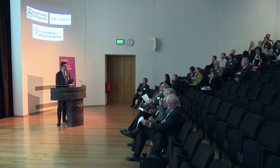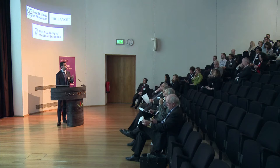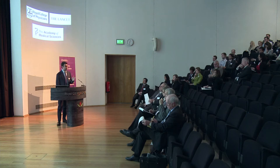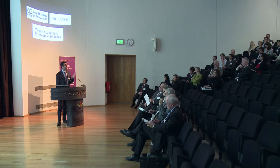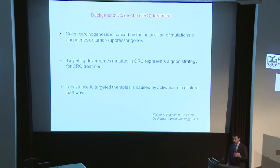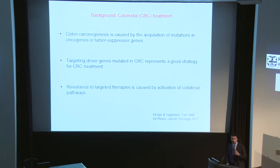The second point is about the fact that when we try to tackle a specific pathway driving carcinogenesis, after two weeks we see resistance in the patients because of the activation of collateral pathways. So the question is: can we find effectors which are downstream of different pathways that merge on the same microRNA?